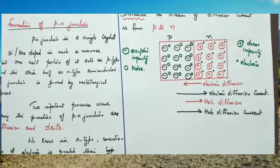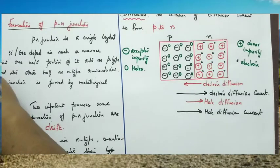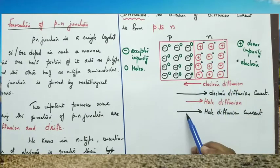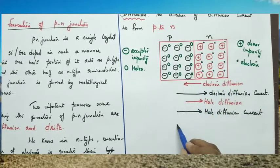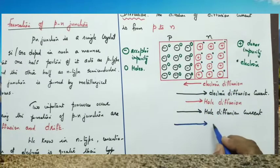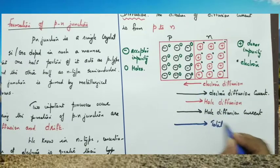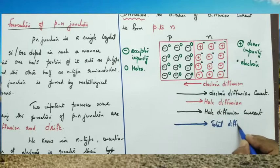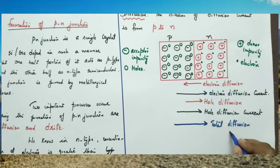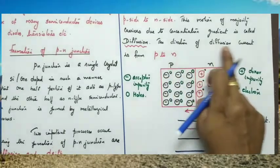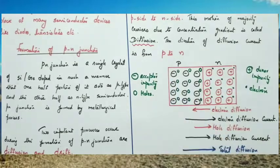What is the direction of the total diffusion current? Electron diffusion current is from P to N and hole diffusion current is from P to N. So, total diffusion current — which is hole diffusion current plus electron diffusion current — is also from P to N.